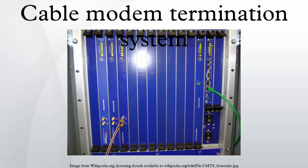The traffic winds its way through the HFC to end up at the cable modem in the subscriber's home. Traffic from a subscriber's home system goes through the cable modem and out to the internet in the opposite direction.